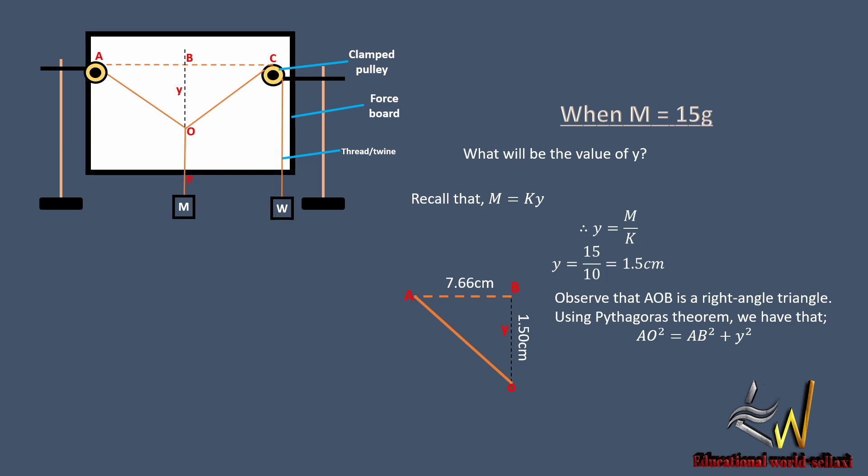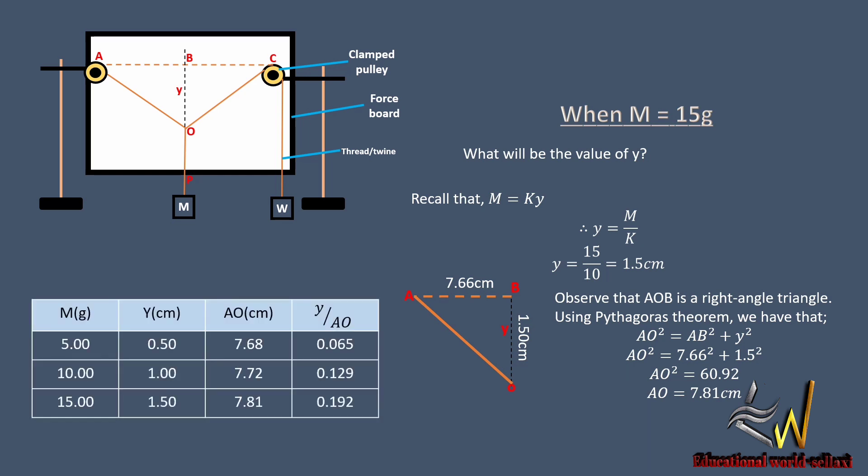So we have AO squared equals AB squared plus y squared. Simplifying everything, we now have that AO squared equals 60.92. Taking the square root of both sides, AO equals 7.81 centimeters. So we now compute our table of values. When M equals 15 grams, y equals 1.5 cm, AO equals 7.81 cm, and y over AO when evaluated is 0.192.